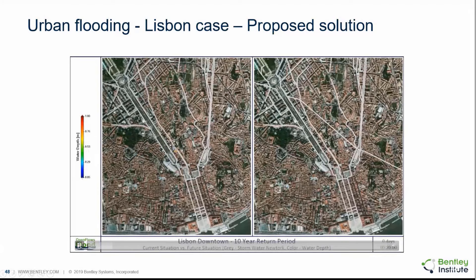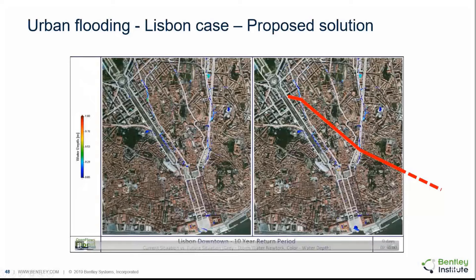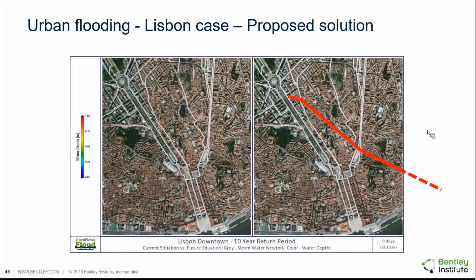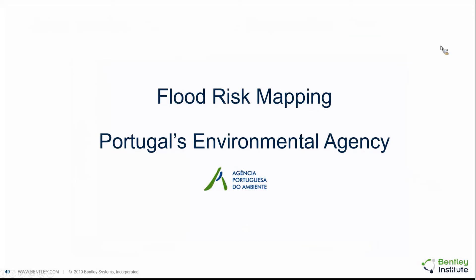With the validated model, we were able to do scenarios and propose solutions to solve the flooding problem. On the left is the reference situation; on the right is the proposed solution — building an intercepting tunnel that would intercept water from two main pipes, which are actually two piped rivers or streams going through underground conduits. The proposed solution collects water from upstream and discharges it to the Tagus estuary. This solution was approved and is now under construction as an almost 200 million euro project.